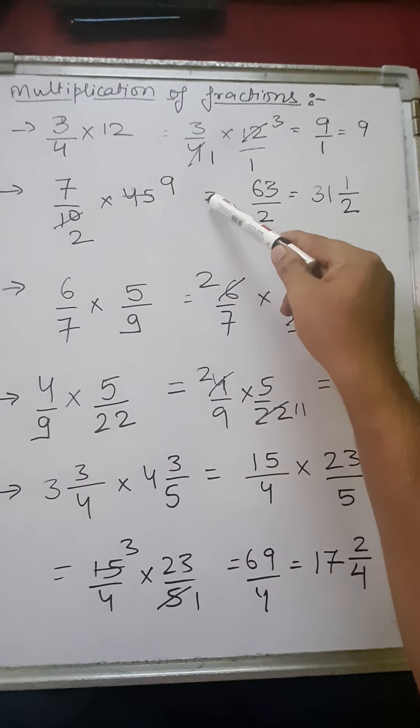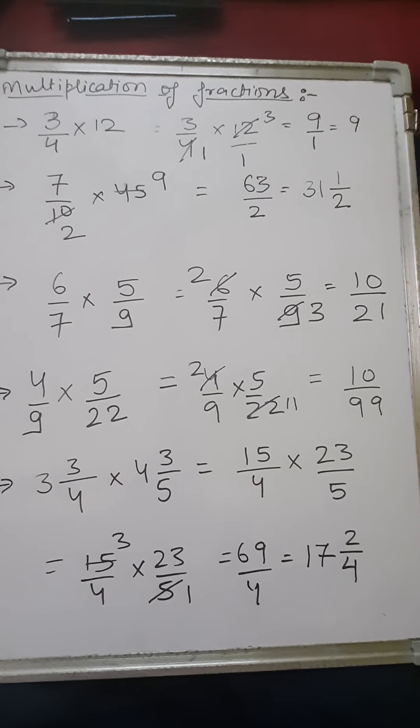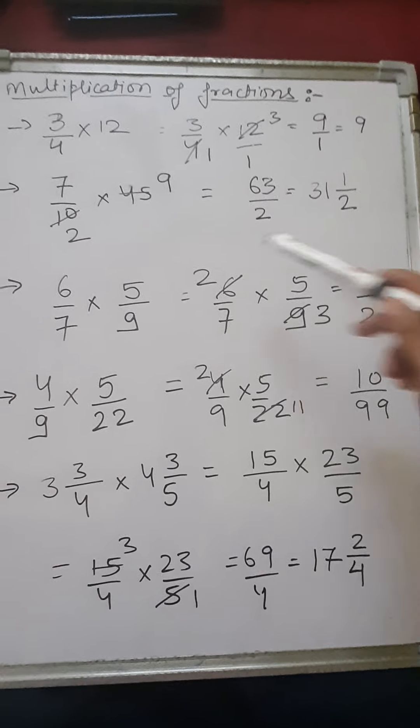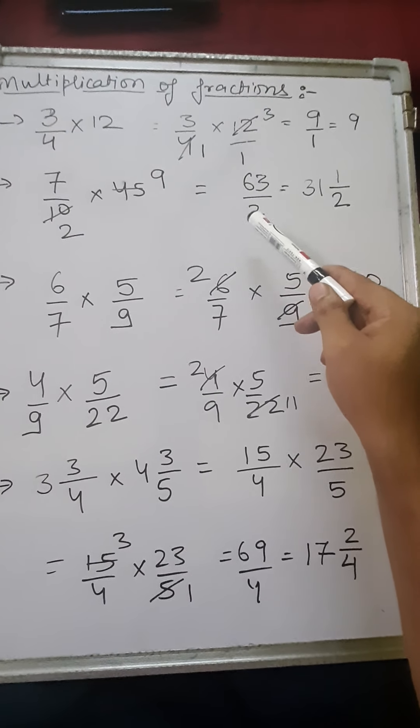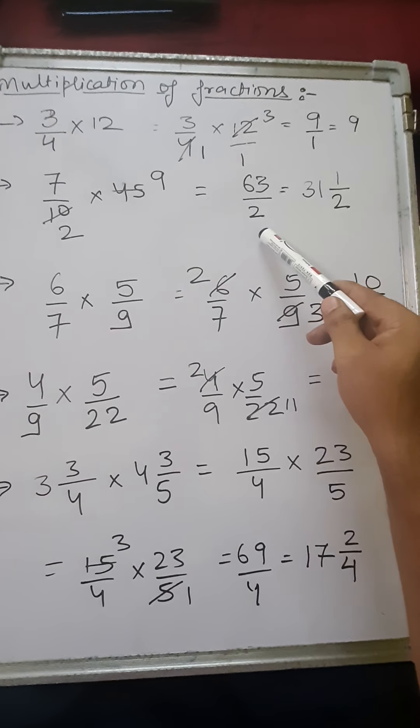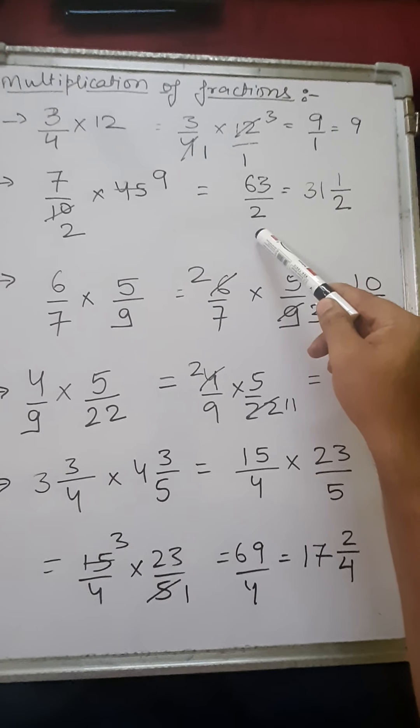7 into, now nothing is being cancelled here. So 7 nines are 63, 63 upon 2. Convert this into mixed fraction. We have studied in the previous class.